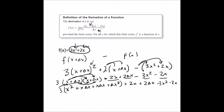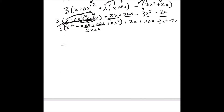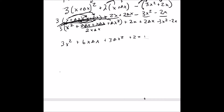Now I need to distribute the 3. Before distributing, I'll combine the two x·Δx terms: 1·x·Δx plus 1·x·Δx is 2x·Δx. Then distributing the 3: 3 times x squared is 3x squared, 3 times 2x·Δx is 6x·Δx, and 3 times Δx squared is 3Δx squared. Then we have plus 2x, plus 2·Δx, minus 3x squared, minus 2x.